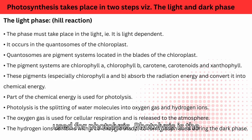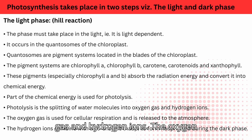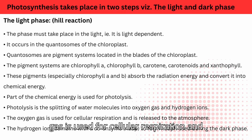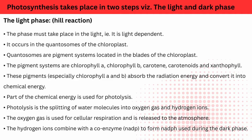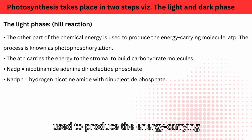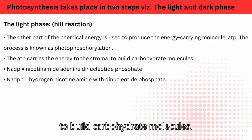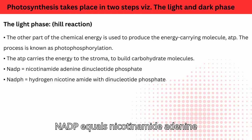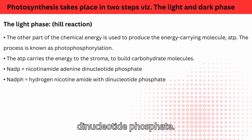Part of the chemical energy is used for photolysis — the splitting of water molecules into oxygen gas and hydrogen ions. The oxygen gas is used for cellular respiration and released to the atmosphere. The hydrogen ions combine with the coenzyme NADP to form NADPH, which is used during the dark phase. The other part of the chemical energy is used to produce the energy-carrying molecule ATP, through a process known as photophosphorylation. The ATP carries the energy to the stroma to build carbohydrate molecules. NADP = nicotinamide adenine dinucleotide phosphate; NADPH = hydrogen nicotinamide adenine dinucleotide phosphate.